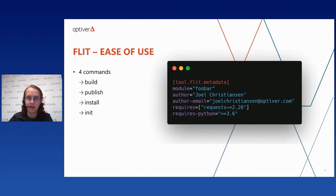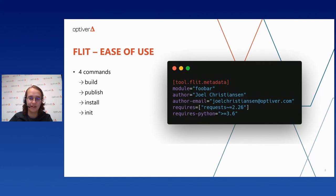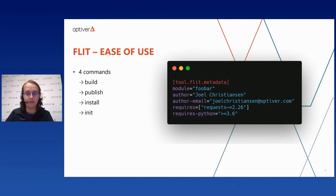Flit has a really good command-line interface in my opinion — all commands are simple and there are only four in total. Just looking at the slide you can already get a pretty good idea of everything Flit does. Keeping such a tool simple is a difficult task in itself. The other side is that it does have less functionality. For example, Flit does not handle lock files — I don't see that as a bad thing, since different tools excel in different situations, like in woodworking where you don't use a screwdriver to cut wood.